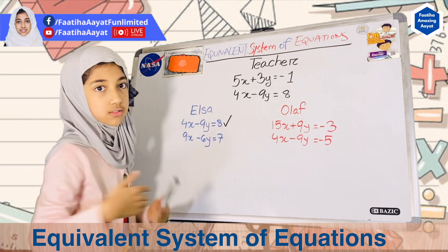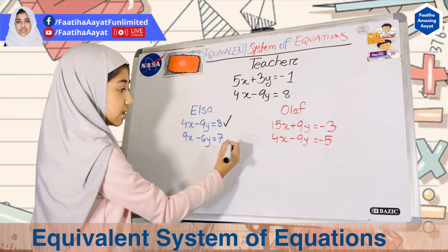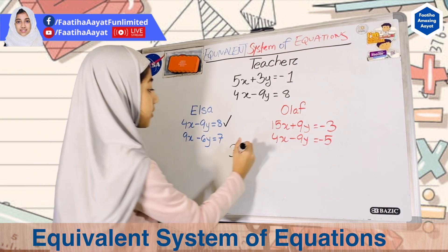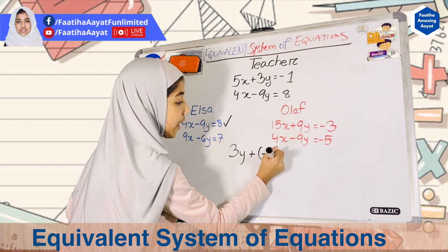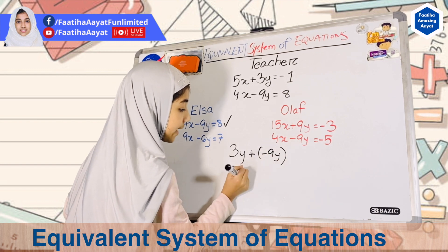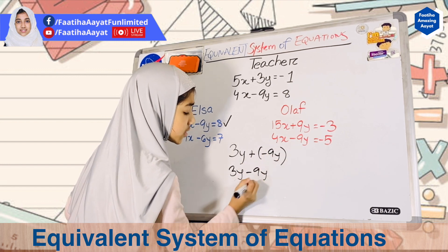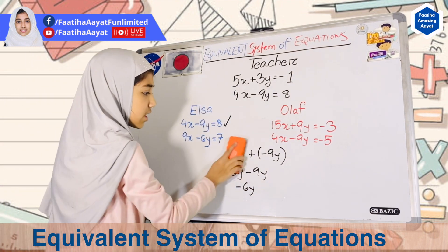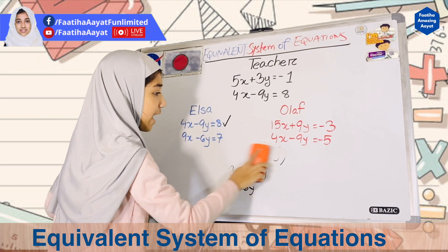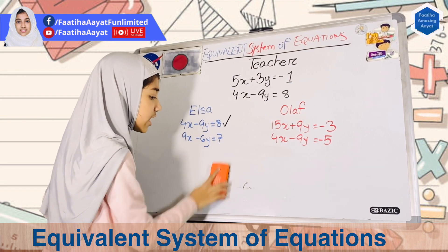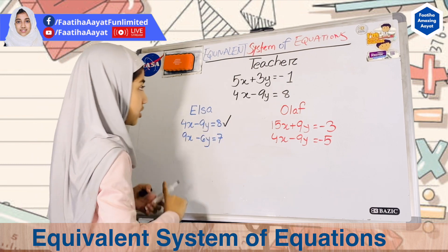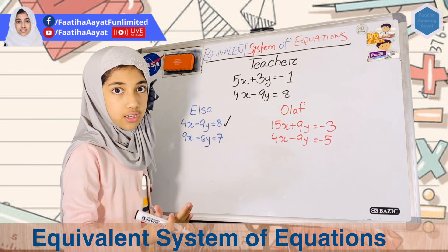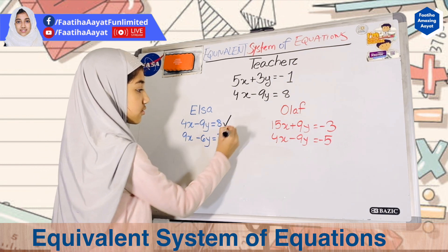5x plus 4x, which is definitely 9x, right? So here let's do 3y and then we're doing plus minus 9y. That means 3y minus 9y, which means it would be minus 6y. That's exactly what Elsa got, right? Elsa has matched with her first equation and also her x and y for her second equation. Now, minus 1 minus 8 is definitely 7, right? So that means Elsa's second equation was also correct.